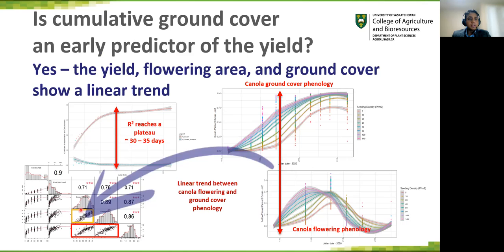In conclusion, can we state that cumulative ground cover is an early predictor of canola yield? We say yes. Yield, flowering area, and ground cover show a linear trend, and a cumulative ground cover-based model only requires 30 to 35 days to reasonably predict the yield expectation. Our research is at preliminary stages of assessment, and more data will fine-tune the model for more precise estimates.